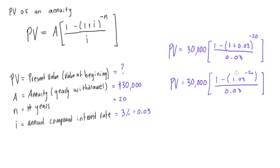And now if you just go ahead in your calculator and carry out the rest of these steps, you'll find that the present value of this annuity is going to be $446,324.25.